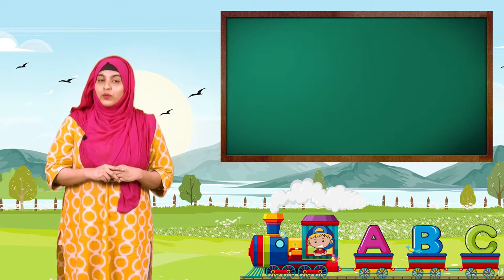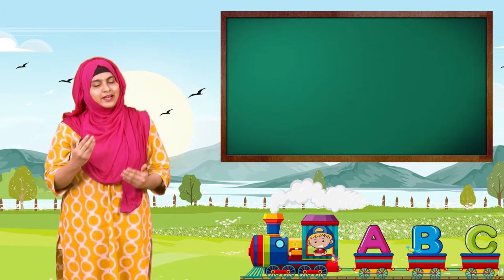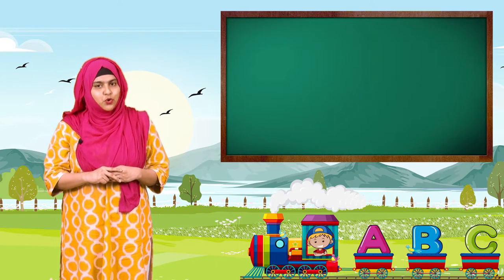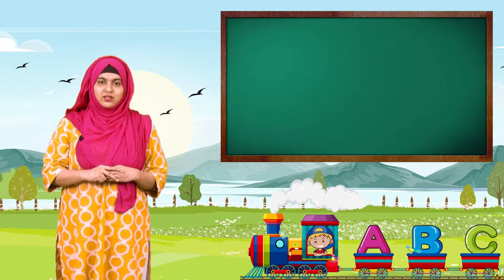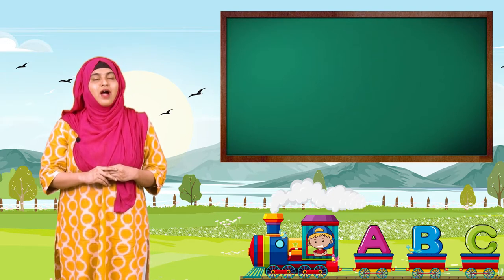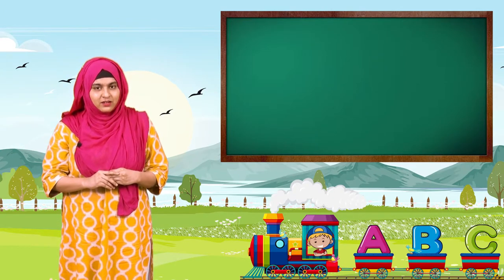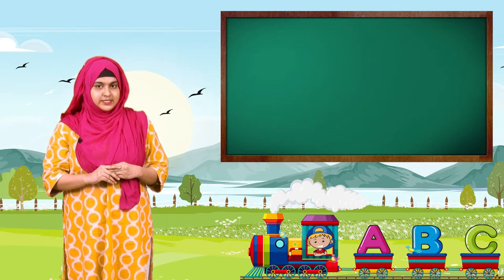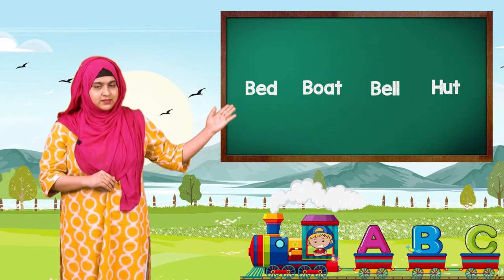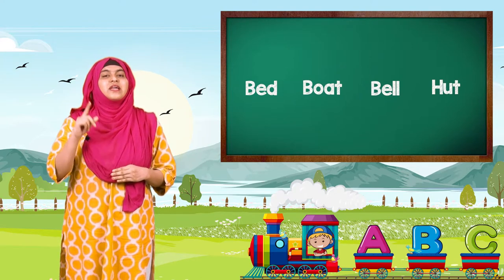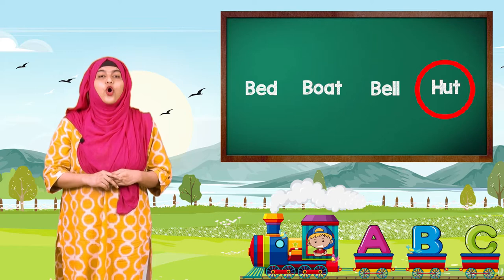Children, now we will do another fun activity. Toh bachcho, ab ham ek aur mazedaar activity karenge. On your screen you will be shown a group of words and you have to find the odd man out. For example, the first group of words are Bed, Boat, Bell, and Hut. The correct answer is Hut — Hut is the odd man out.